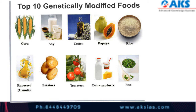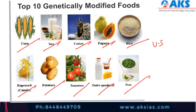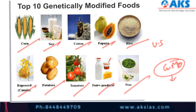In various parts of the world, different types of GM crops have been tested. In the United States, genetically modified corn, soya, cotton, papaya, rice, rapeseed oil, potato, tomatoes, dairy products, and peas have been produced using genetically modified organisms.